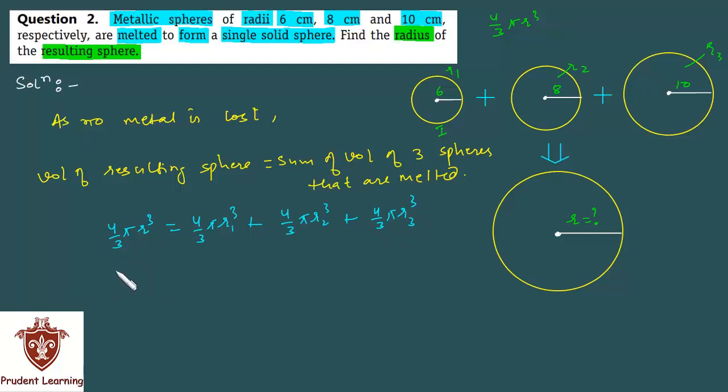Now keeping 4 by 3 pi r cube common on the left hand side as such and taking 4 by 3 pi common on the right hand side we have r1 cube plus r2 cube plus r3 cube. 4 by 3 pi gets cancelled on both the sides and we are left with r cube is equal to r1 cube plus r2 cube plus r3 cubes.